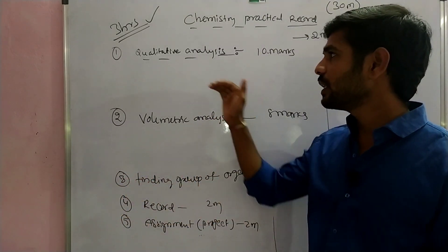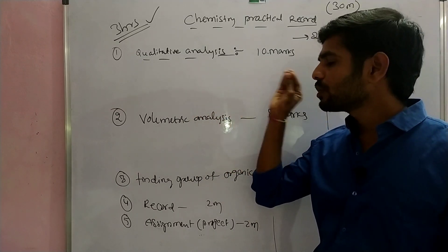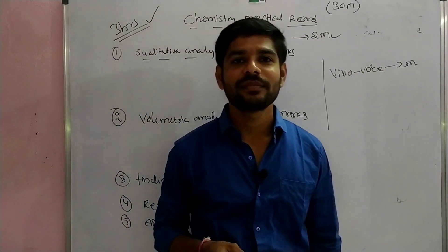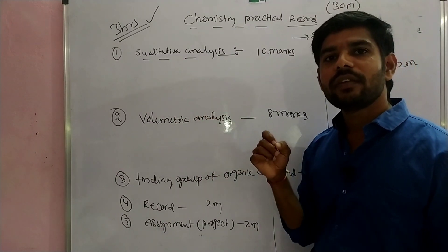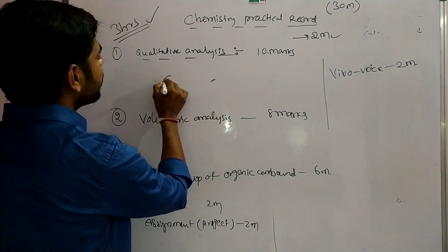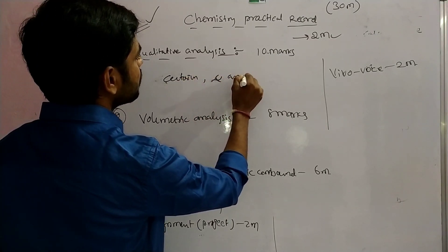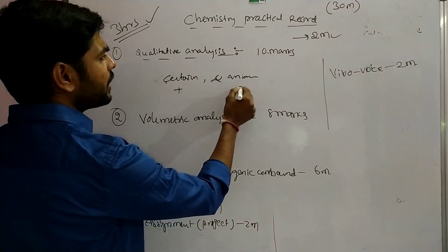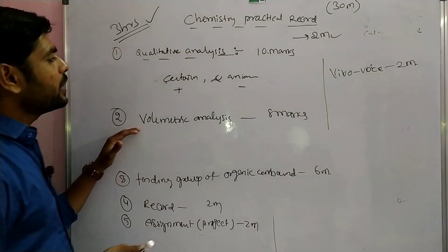The first thing we have to do is qualitative analysis experiments. This qualitative analysis experiment is called salt analysis. We test the salt and then calculate the cation (cation positive) and anion (anion negative).